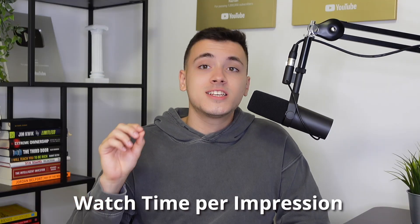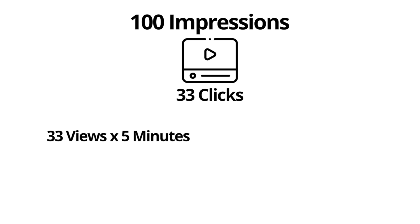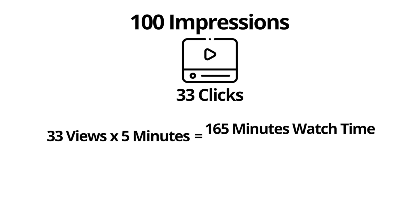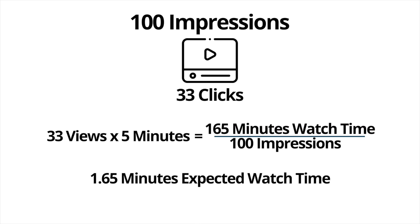Now let's talk about watch time per impression — my favorite part, because YouTube is actually hiding this from us. All that YouTube cares about is not likes, comments, engagement, or views — it's watch time per impression. Let's say those previous 3 videos that got 33 clicks are each watched by those 33 people for 5 minutes on average. That results in 165 minutes of watch time for each video per 100 impressions. YouTube showed those videos 100 times, 33 people clicked, and each watched for 5 minutes, resulting in 165 minutes of watch time — divide that, and you get 1.65 minutes of expected watch time.